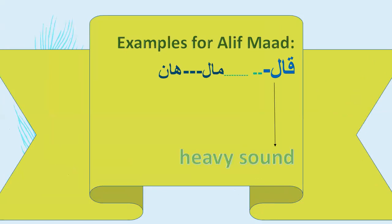Alif Mad preceded by Mim — Mim is a light letter, and Haa is also a light letter, so it is a light sound. It is pronounced 'Maa', not 'Maa' with heaviness — a light 'Maa'.